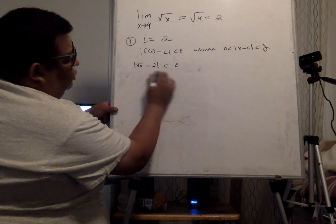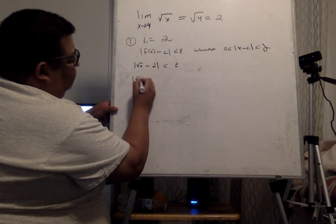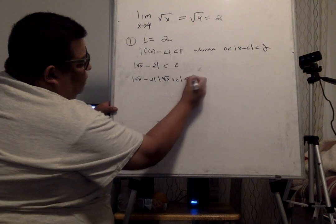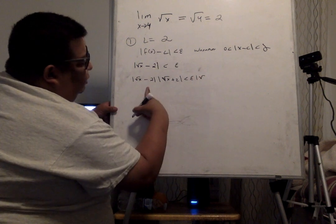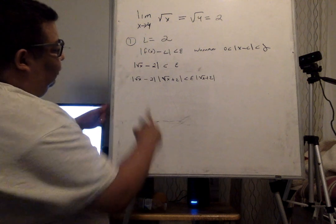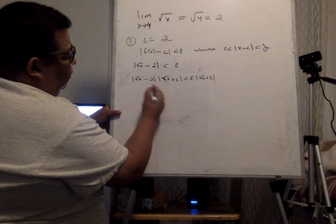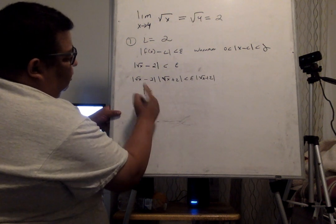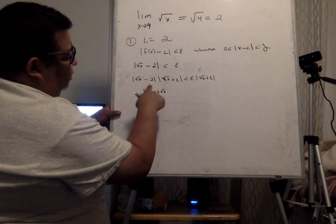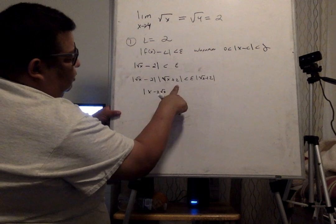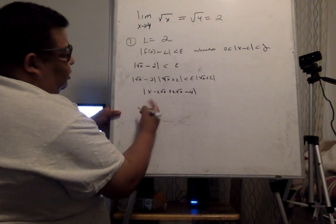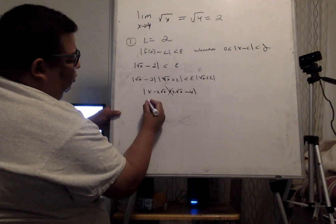I'll start by multiplying both sides of |√x - 2| < ε by (√x + 2)/(√x + 2). Using FOIL on the numerator: √x times √x is x, minus 2 times √x is -2√x, plus √x times 2 is +2√x, and -2 times +2 is -4. The middle terms cancel, so we're left with |x - 4| < ε(√x + 2).